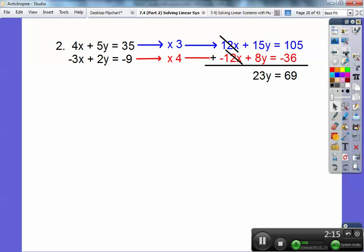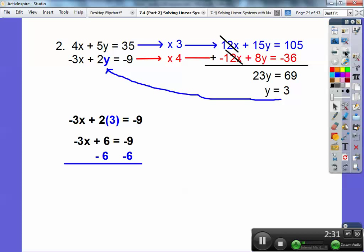So I get 15 plus 8 is 23, and then 105 minus 36 is 69, and 23 times 3 gives me 69, so y equals 3. So you can plug in y equals 3 anywhere. I like the smallest one, so I'm going to plug it right there. 2 times 3 is 6, and then I'm going to subtract 6. Be careful, you guys. Negative 9 minus 6 is negative 15, so negative 3x equals negative 15, so x must be 5. Remember, x always comes first.